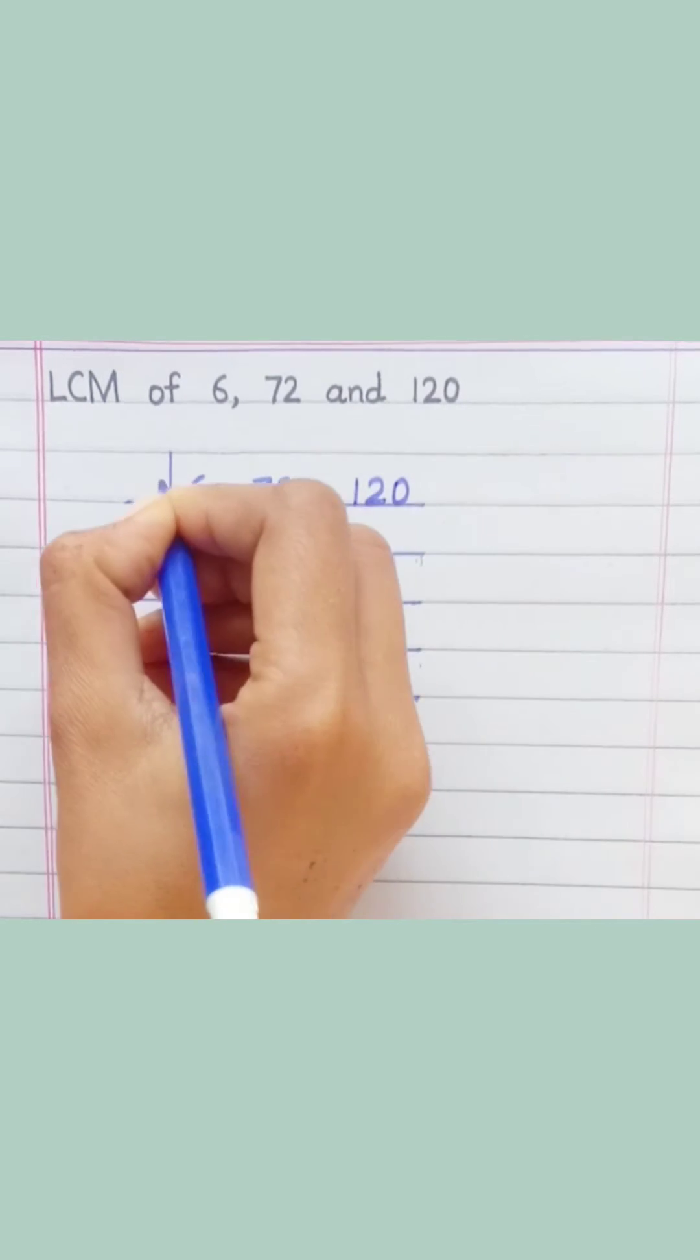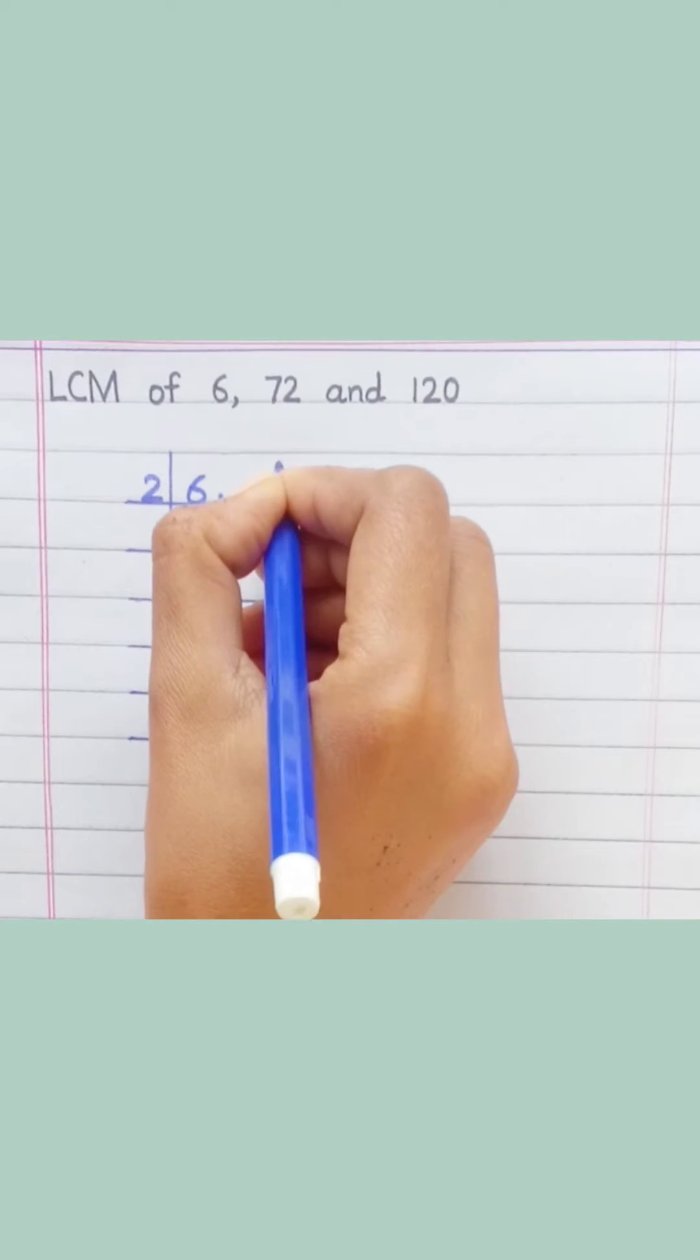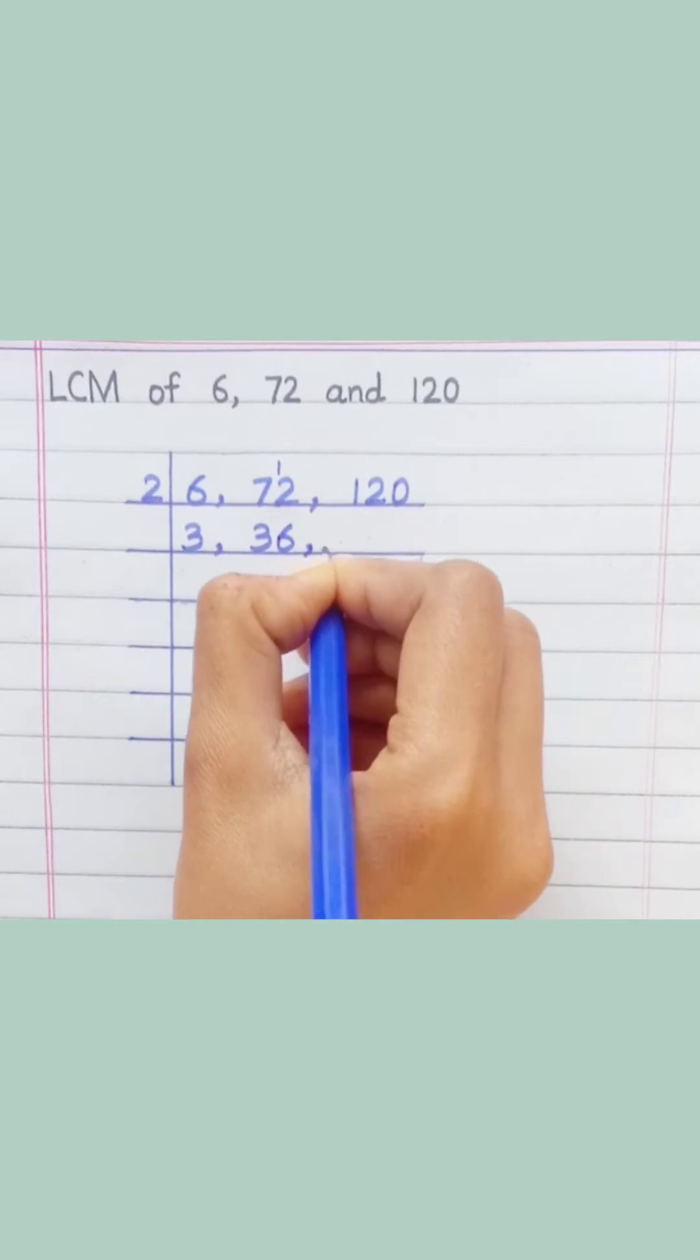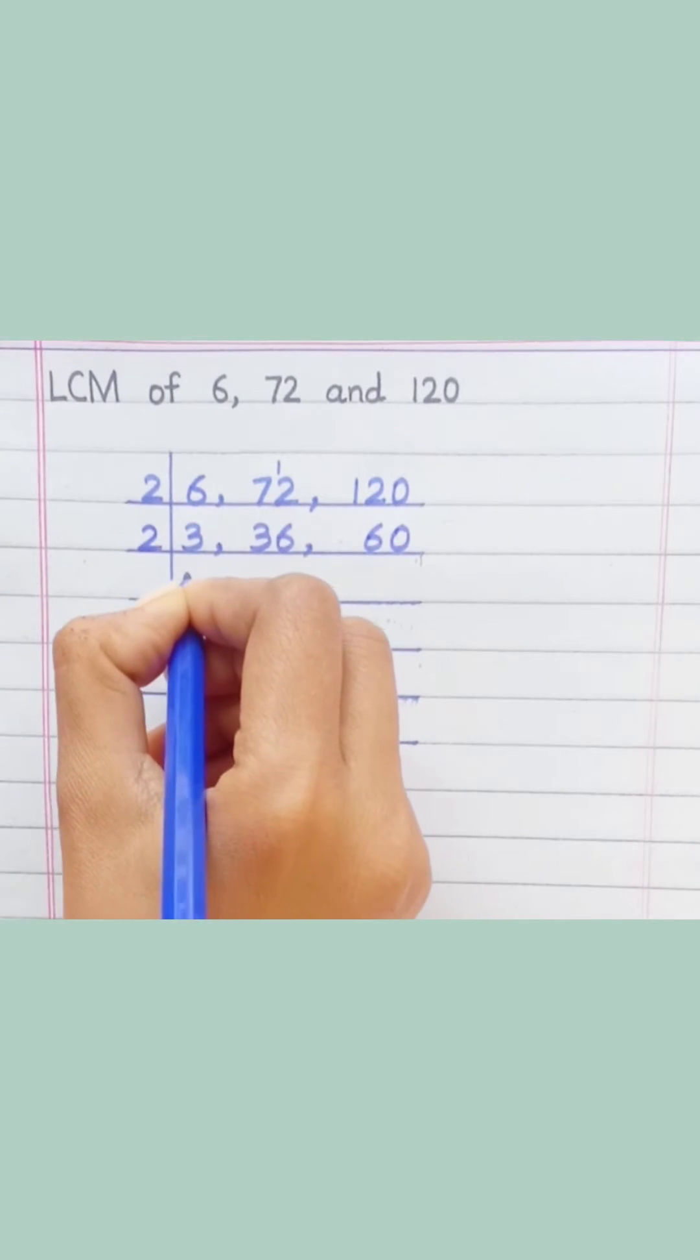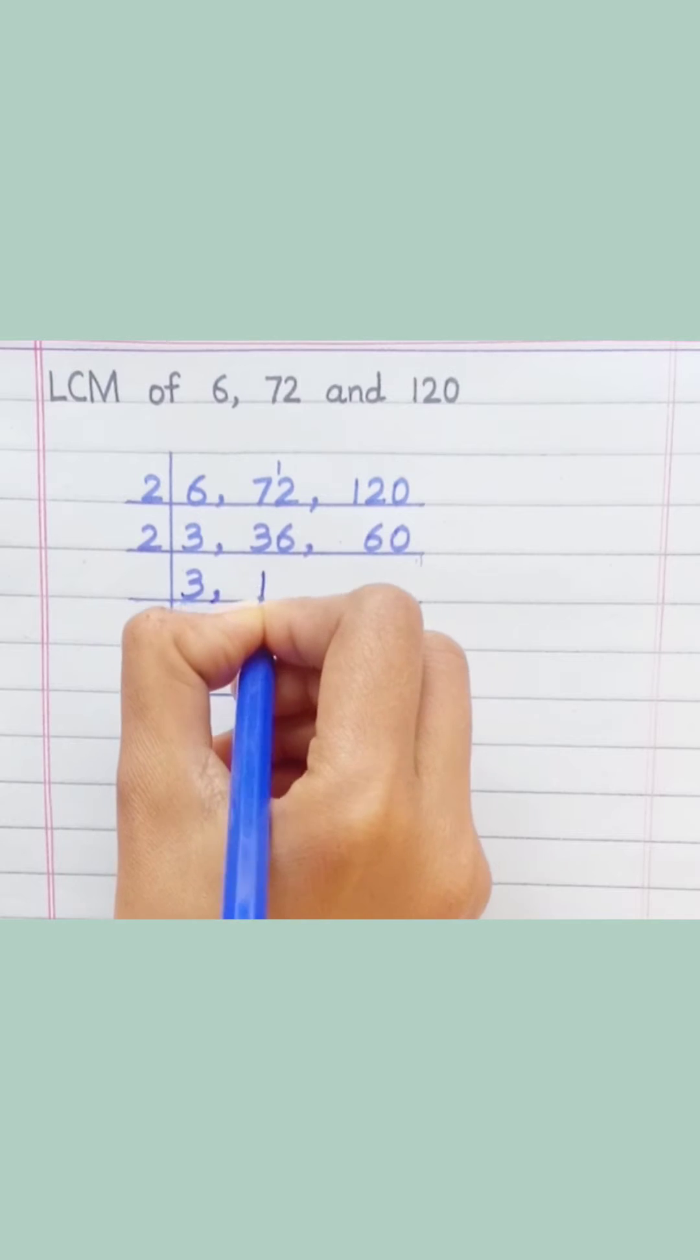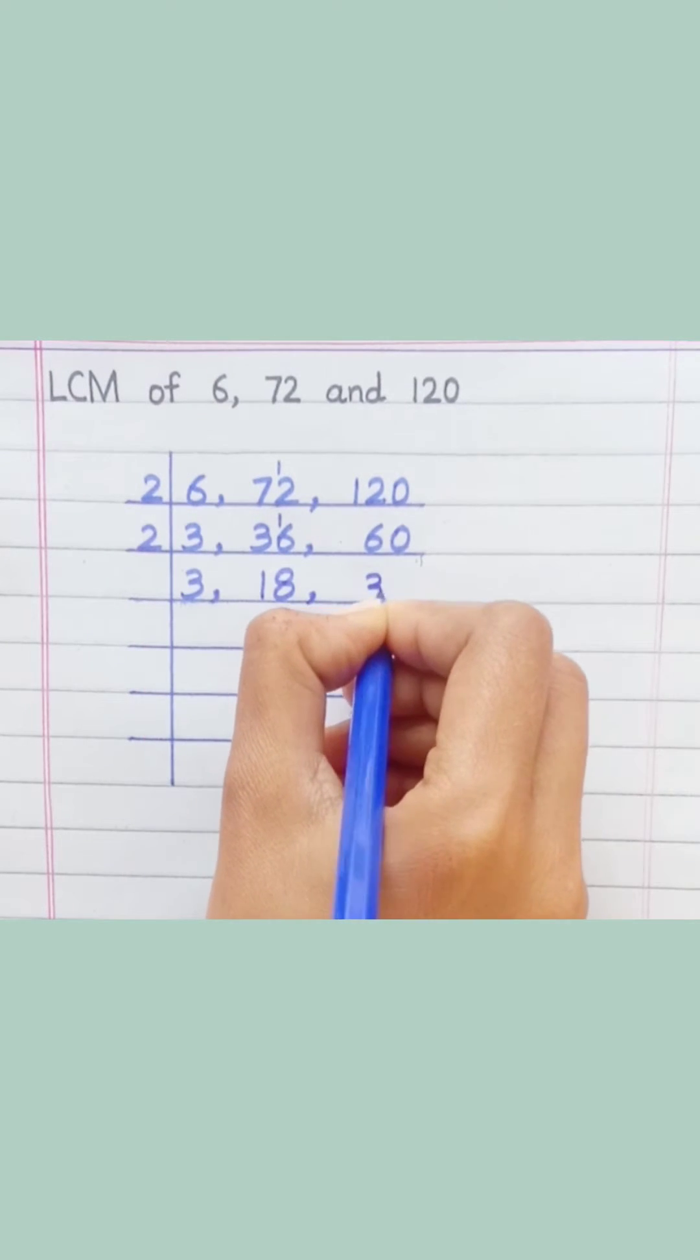2 3s are 6, 2 3s are 6, 2 6s are 12, 2 6s are 12, 2 0s are 0. 2 1s are 2, 2 8s are 16, 2 3s are 6, 2 0s are 0.